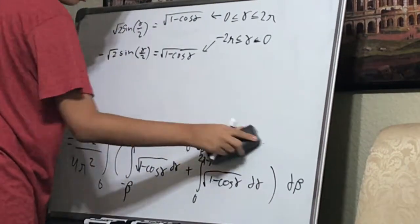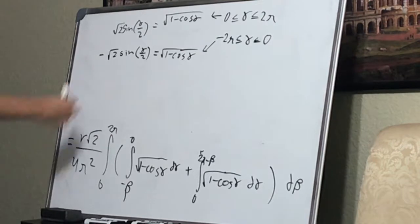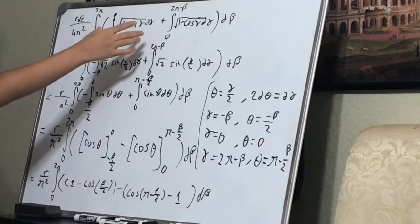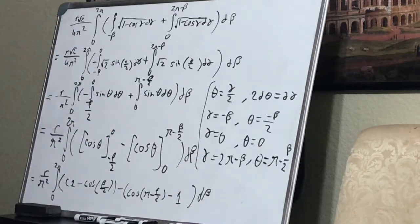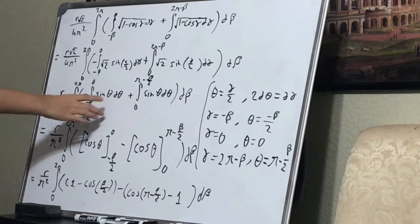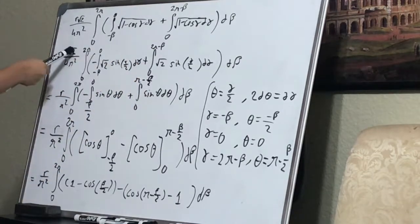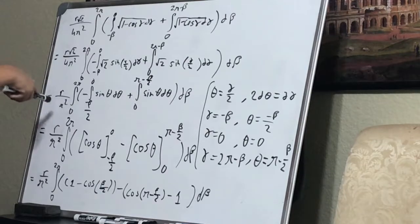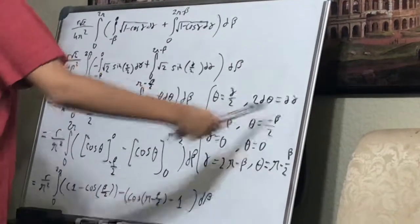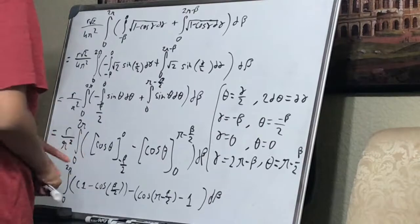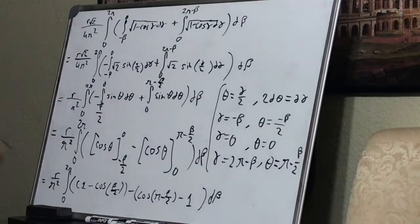Now we have it split into two cases. We can substitute in the half-angle identity for each. After applying the formula, we take the square root of two out. The two multiplied by root two divides with the four in the denominator, giving us R over two pi squared. We then substitute theta for gamma over two, so two d theta equals d gamma, and we go ahead and calculate new limits of integration. After simplification, we get R over pi squared.